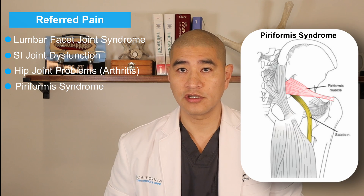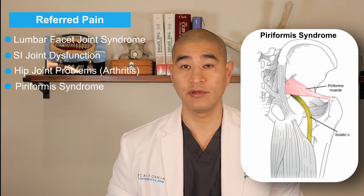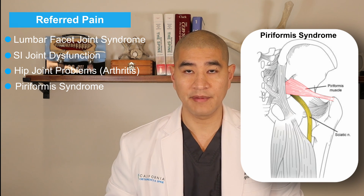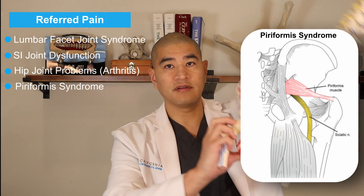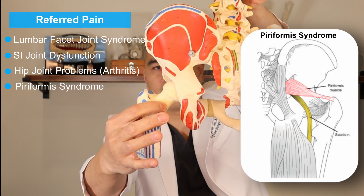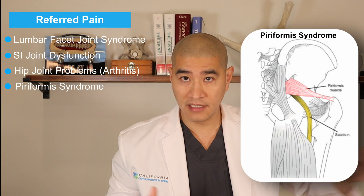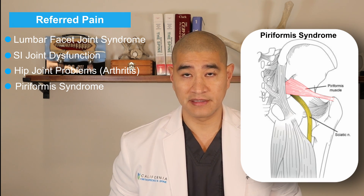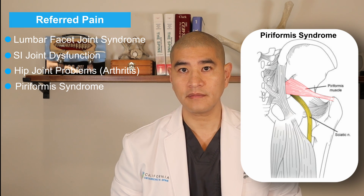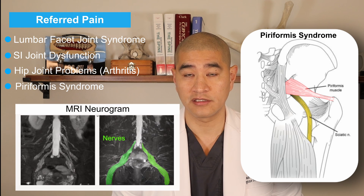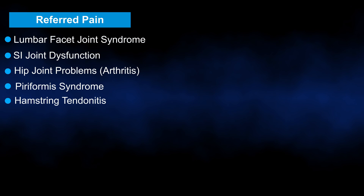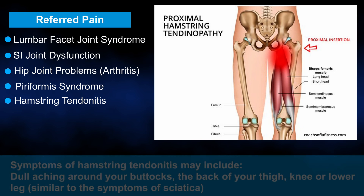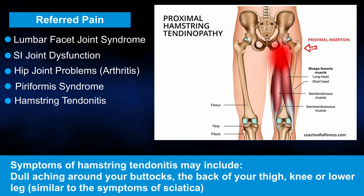Lastly, there's piriformis syndrome — a diagnosis of exclusion, meaning we've ruled out radiculopathy, sciatica, and any other cause of buttock and leg pain. The piriformis muscle goes from the pelvis and attaches to the hip joint, and the sciatic nerve runs underneath it as it goes down the leg, so there's thought that the muscle can sometimes pinch the nerve. The imaging we'd get is an MRI neurogram of the pelvis, which can map the nerve at the level of the piriformis muscle. Similar to piriformis syndrome is hamstring tendonitis — inflammation of the hamstring tendon where it inserts into the pelvic bone — diagnosed with physical exam and MRI, which can also mimic sciatica.